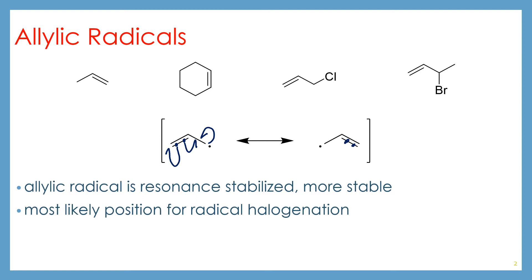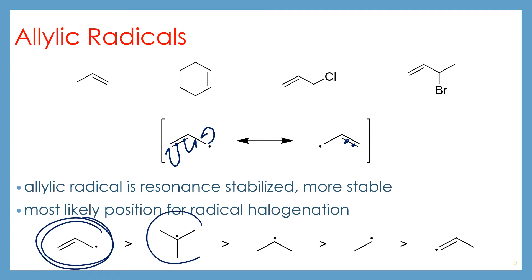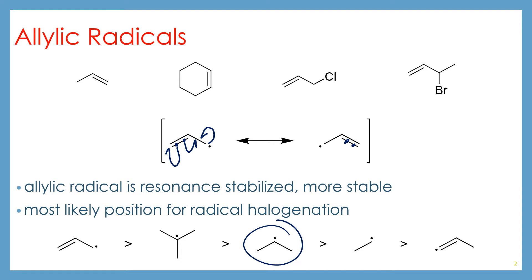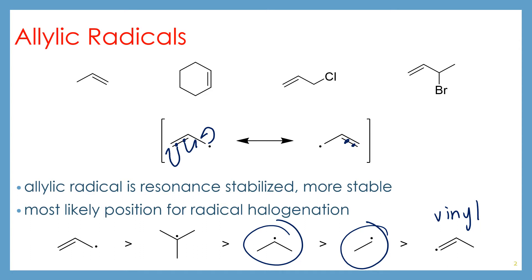This is the most likely position for radical halogenation. So if you are looking at a radical reaction and you have an allylic position, this is where it's going to occur. Allylic radicals actually rank higher even than tertiary radicals. So you can readjust your previous assumptions and put allylic before tertiary, which comes before secondary, which comes before primary, which comes before vinyl. Vinyl radicals are radicals formed directly on the sp2 carbon — those are typically very unstable, so you usually do not form those.